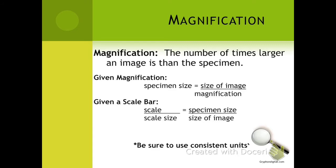Resolving power is the ability to distinguish between two things that are very close together in a magnified image. So for an electron microscope, you're going to be able to see more detail and, of course, much greater magnification. However, in order to use an electron scanning microscope, the specimen has to be coated in some type of metal.